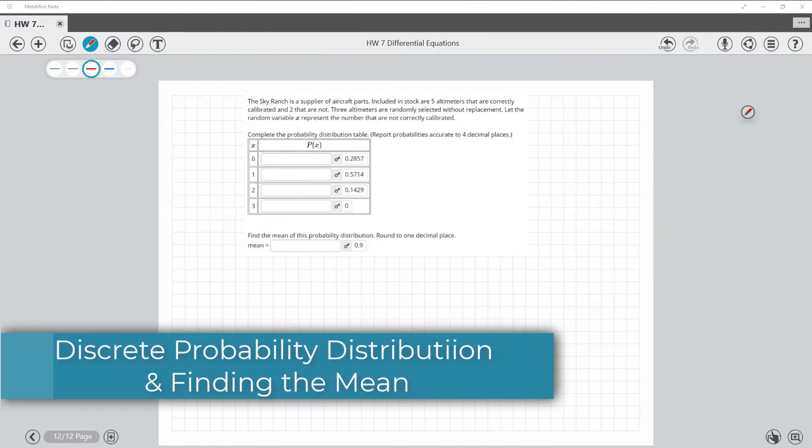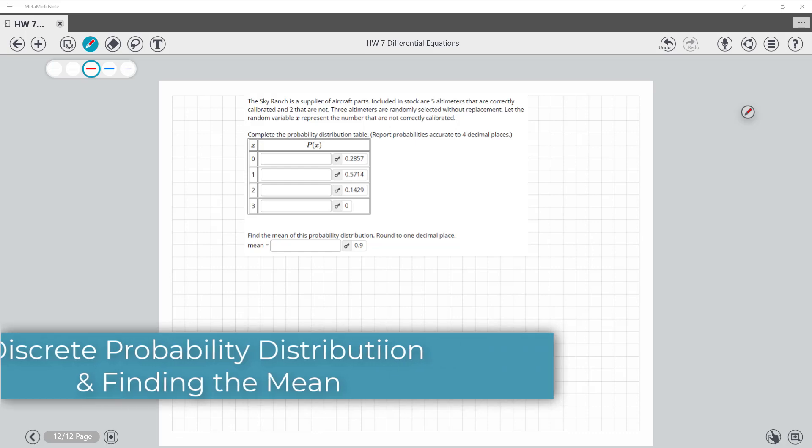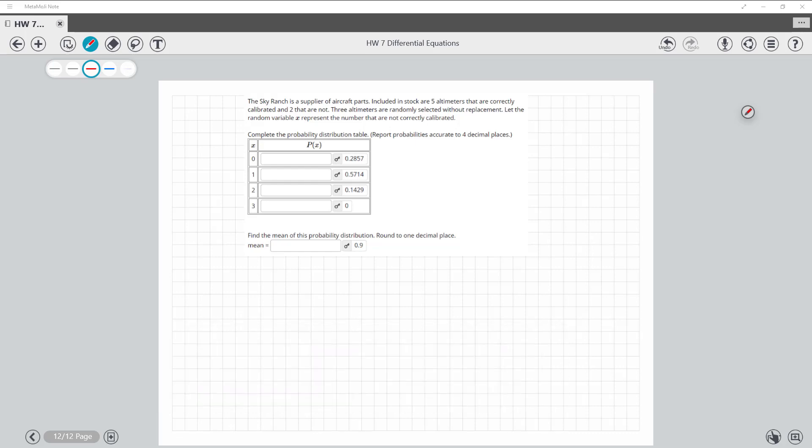All right, probabilities here. My microphone's over there, so let's move it over here. So it says we have five of these altimeters that are correct. I'm going to say five equals correct, and two that are not correct.